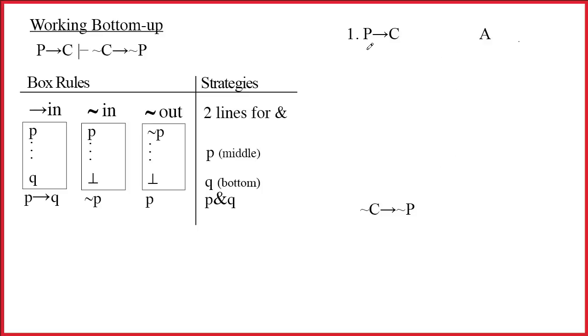It does make sense. P arrow C means if P then C, and we've mentioned that this is logically equivalent to if not C then not P.